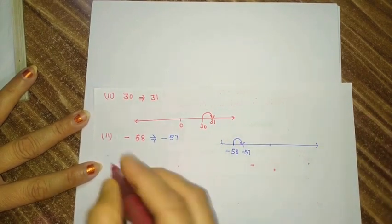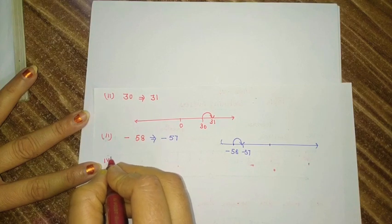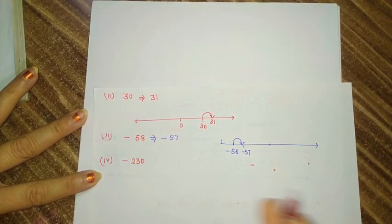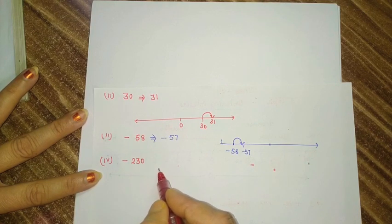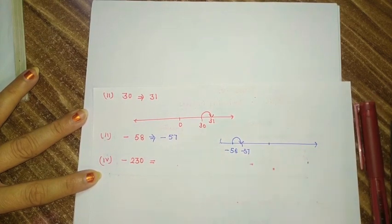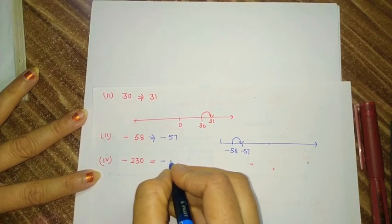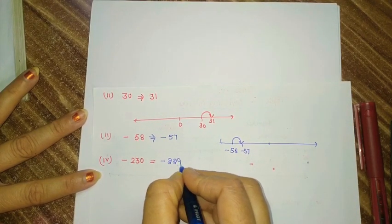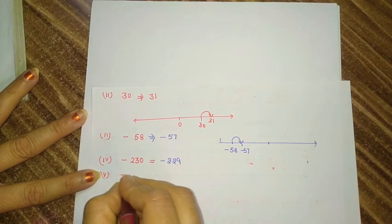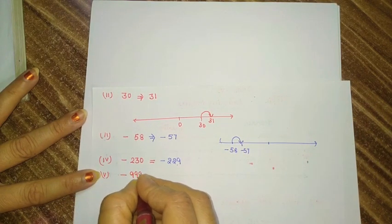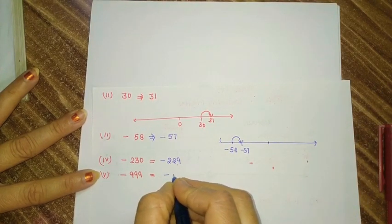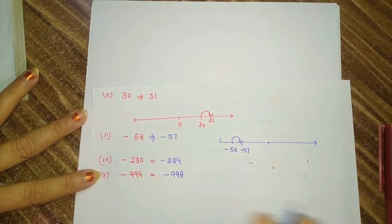Another number: minus 230. Same way, if we move one step to the right, its successor is minus 229. If the number is negative 999, then one step to the right gives the next number, which is negative 998.